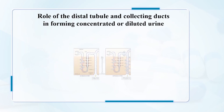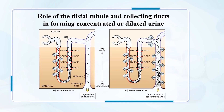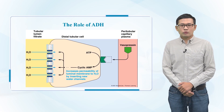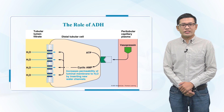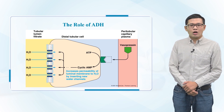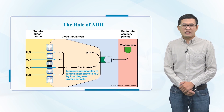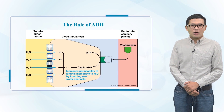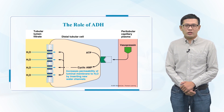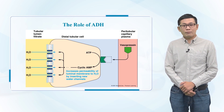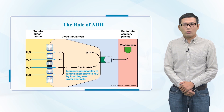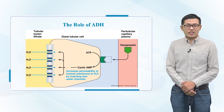With the action of ADH, the distal and collecting ducts can form concentrated or diluted urine by transporting water. ADH triggers cells to move the water channels they have in storage over to the apical side, which allows more water to leave the urine. The permeability of the luminal membrane to water increases.